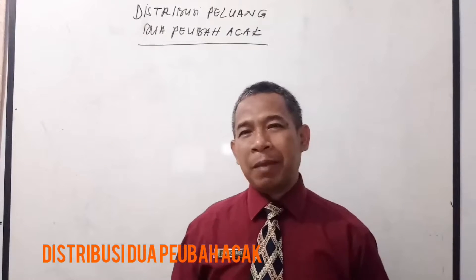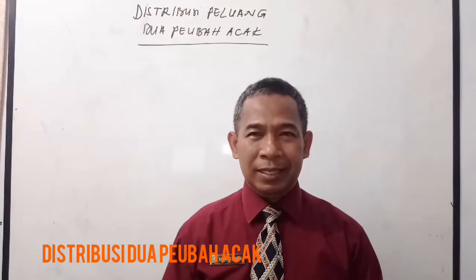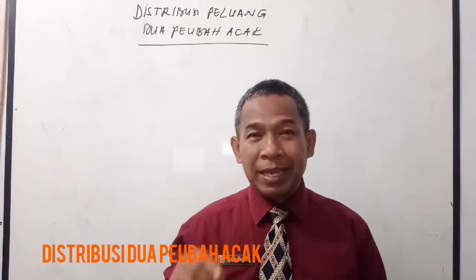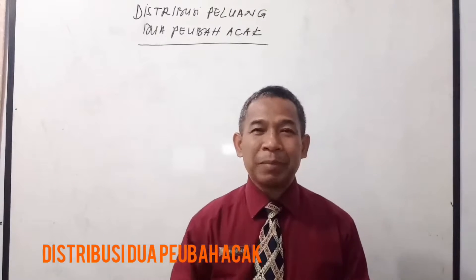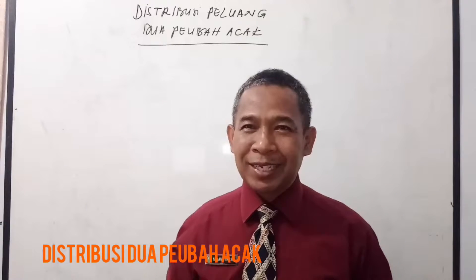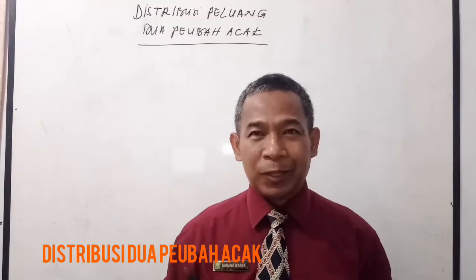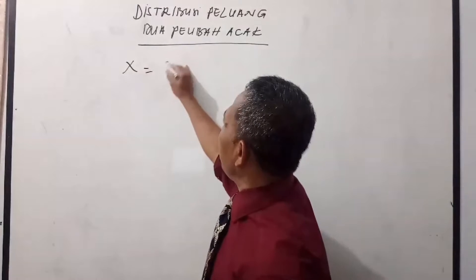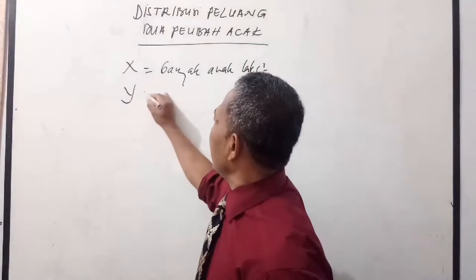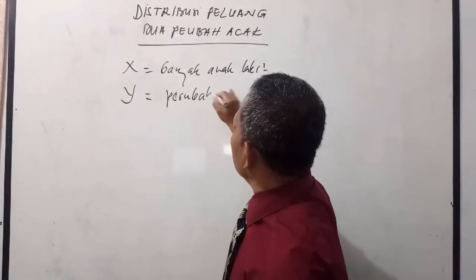Pada kesempatan ini, kita coba bagaimana apabila peubah acaknya terdapat dua dan terjadi sekaligus. Misalnya keluarga tadi menginginkan tiga orang anak. Peubah acak X adalah banyaknya anak laki-laki. Sementara peubah acak yang kedua, misalnya Y, kita tentukan sebagai banyaknya perubahan jenis kelamin.